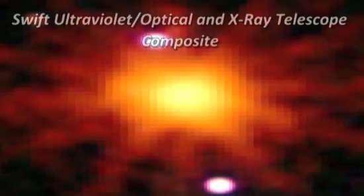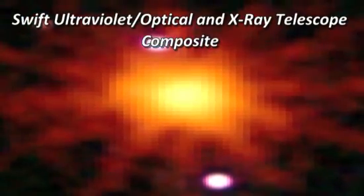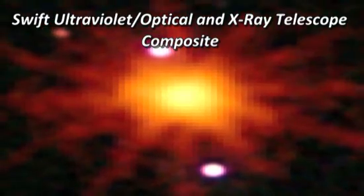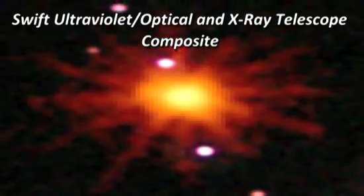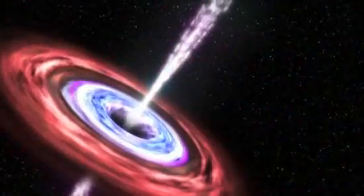From the wavelengths of this flare and how it changed over time, researchers quickly understood they must be seeing the results of matter plummeting into a huge black hole about one million times more massive than our sun.